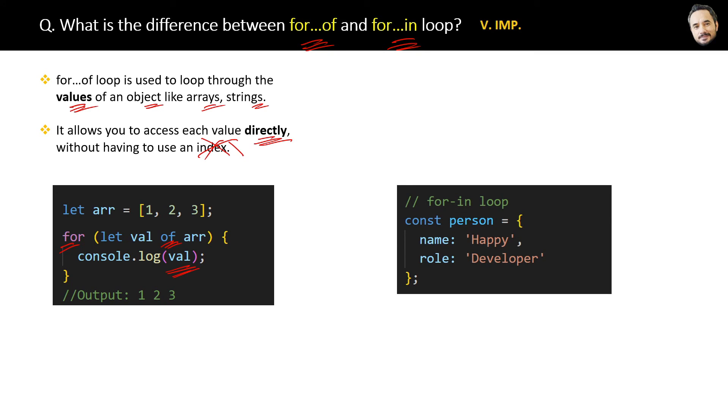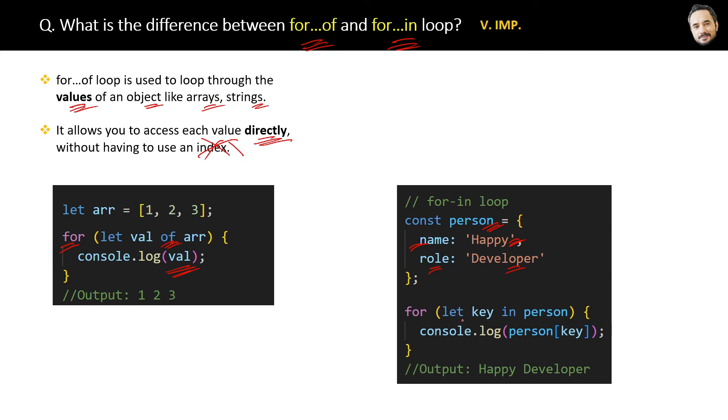Here we have an object with keys and their values - it's like a key-value pair. To iterate over this kind of key-value pair object, we use the for...in loop like this.